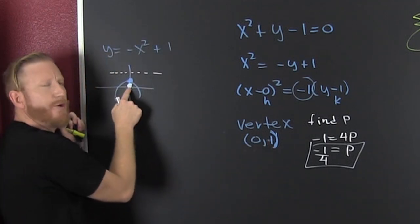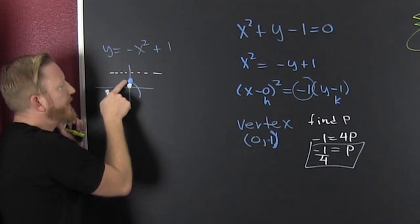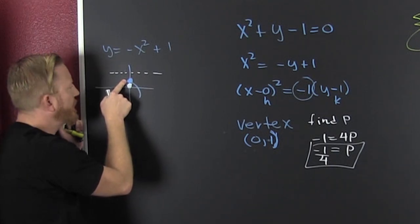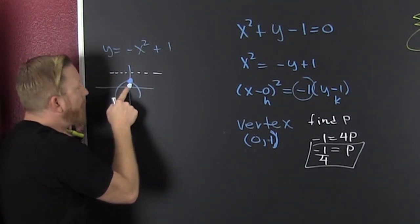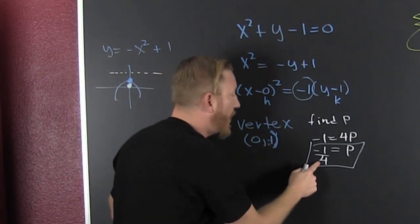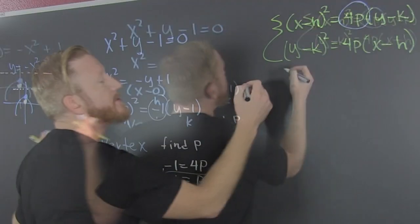So if I'm finding the focus, bigger than or smaller than, look at it, the focus is smaller than the vertex. So I'm going to take that y value and I'm going to subtract off one fourth. So focus.